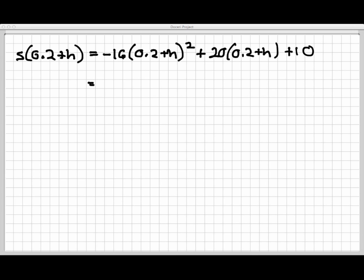Now let's do some algebra to simplify this. First thing I will do is foil out this quadratic term right here. So I have negative 16 times, I'll leave the checking of the details to you, but this comes up to be 0.04 plus 0.4h plus h squared. Now distribute the 20 throughout the group here. And that will give me 4 plus 20h, plus a 10 at the end.